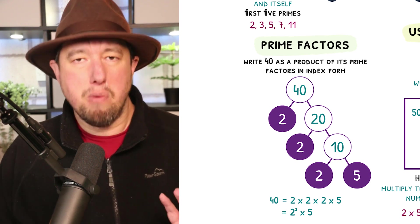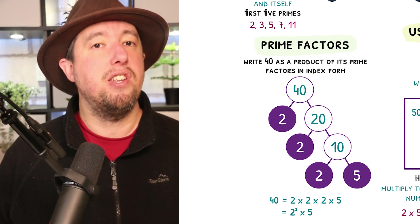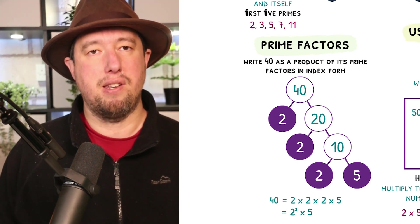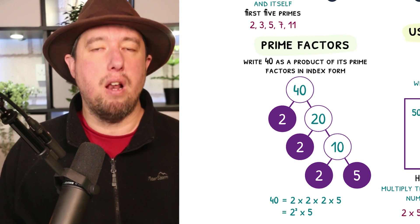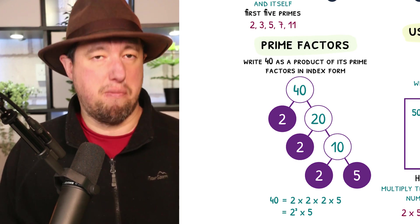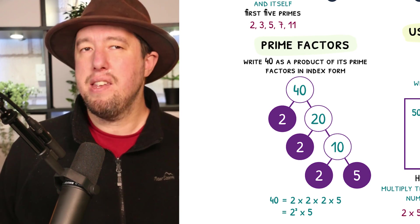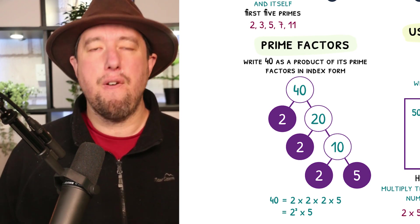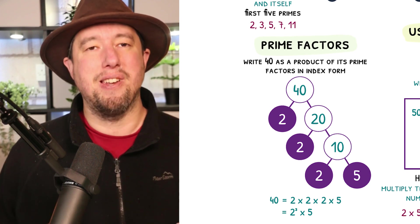2 is a prime number, so we can just leave that, but 20 is not, so we need to focus on this next. 20 is 2 times 10, so again, we include the circles below. 10 can be split into 2 and 5, because 2 times 5 is 10. Adding these circles, we notice that both 2 and 5 are prime numbers. When this happens, we can stop.